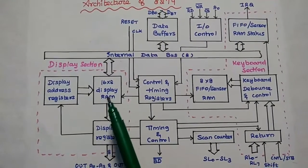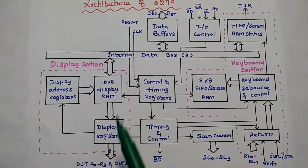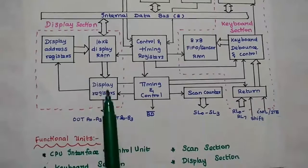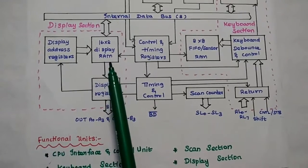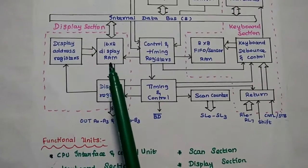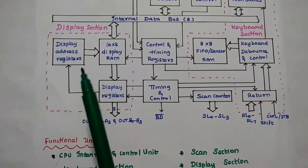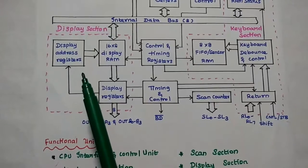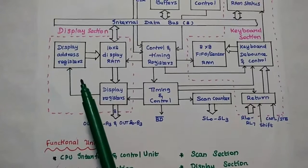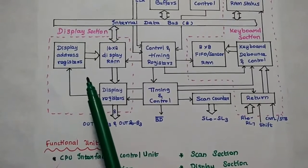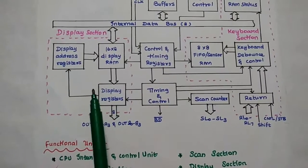The display section has display address registers, 16x8 display RAM, and display registers. The 16x8 display RAM is used to store the display codes, and from there we can get the data to the data bus. The display address register is mainly used to hold the address of the current data — that is, the address of the current byte written or read by the CPU — and it can also get the value from the scan counter.